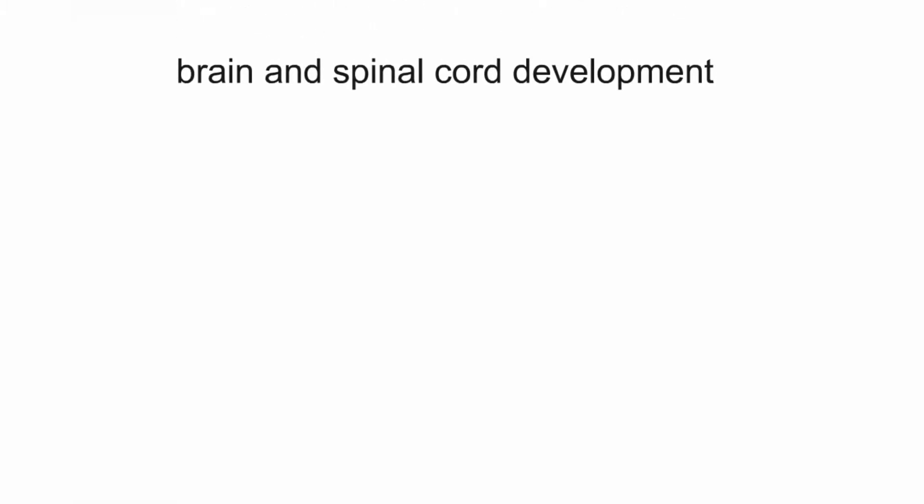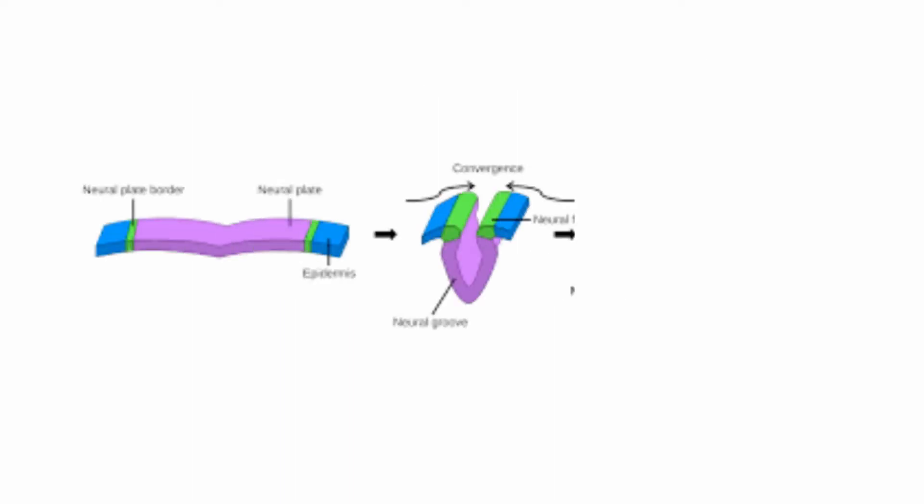You see, brain and spinal cord development begins with neurulation, which is the process of neural tube formation that occurs in the third and fourth weeks of gestation.